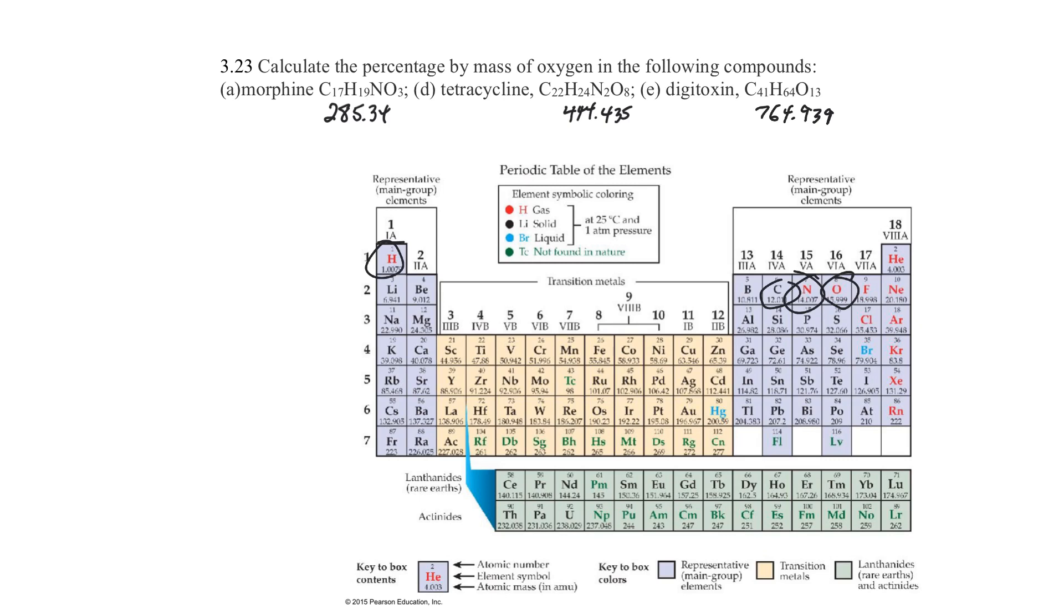You're asked to find how much oxygen is in this. So let's imagine that 285.34 is a quiz, that's the total number of points, and the total number of points you got was just your oxygens. So your total in the quiz was 285, and you got oxygens. What is your percent? So in this first one, morphine, I have three oxygens.